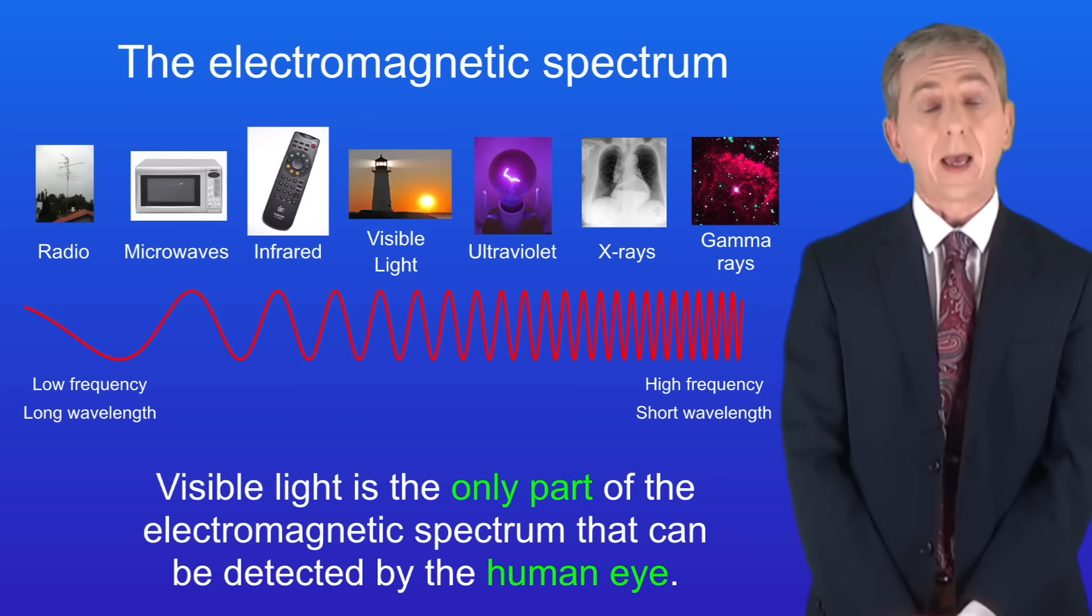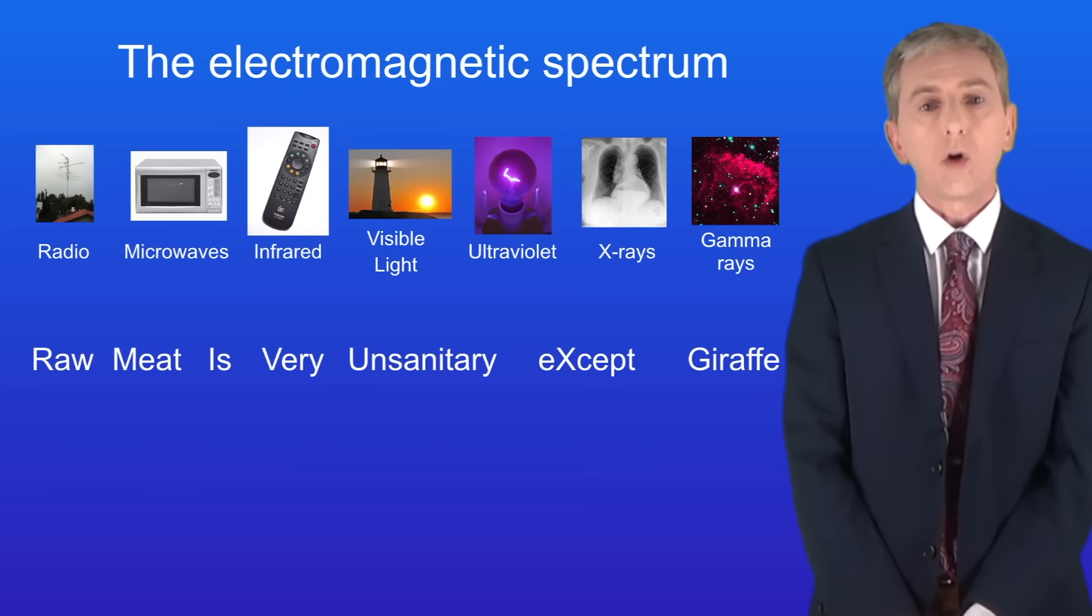Now in the exam you could be asked to name any part of the electromagnetic spectrum. And you can do that by learning this phrase. Raw meat is very unsanitary, except giraffe. And notice that I said except for X-rays, which is cheating a bit but it still works.